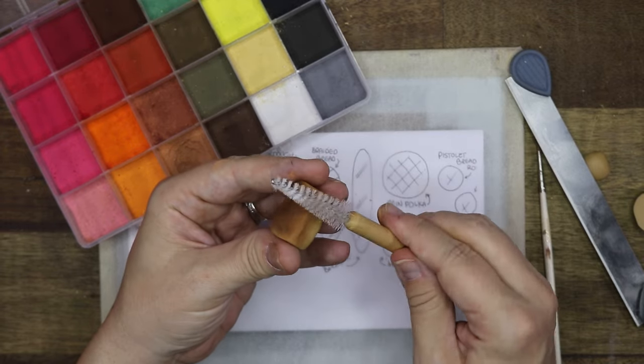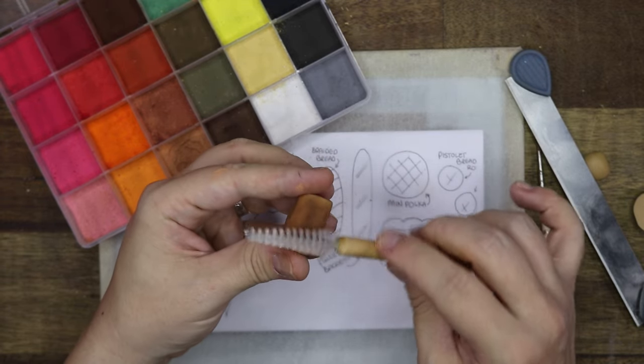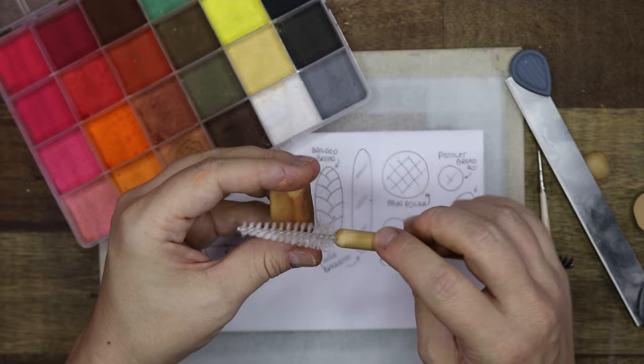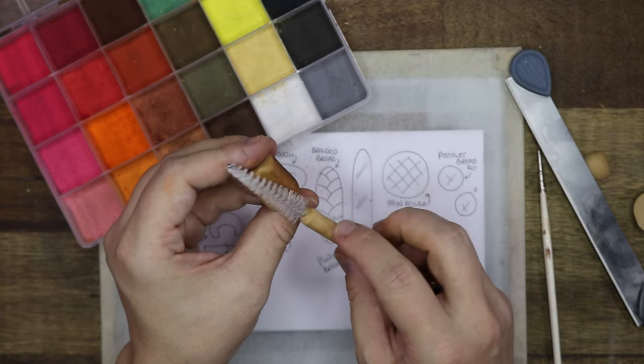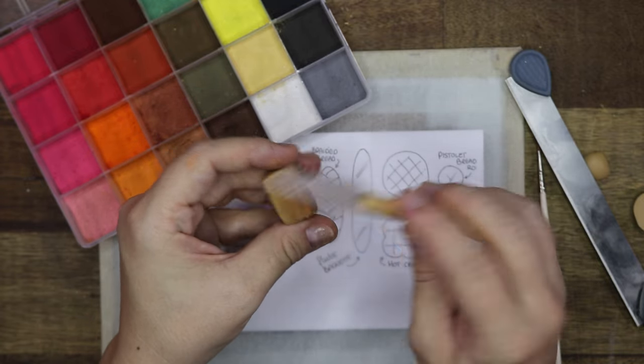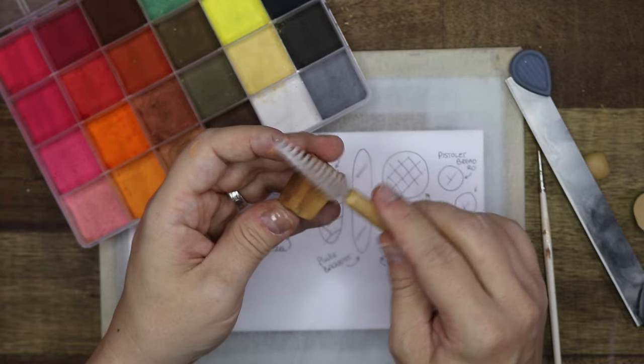After the shading, I go in with a brush tool to add texture to the bread. I do this after as it spreads the chalk pastel a bit more and it shows the color of the clay underneath. Do this until you're happy with what it looks like.